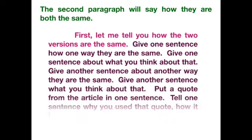Start with a transition sentence like: 'Let me tell you how the two versions are the same.' Then give one sentence about one way they are the same — maybe equipment, rules, or the playing field. Follow that with a sentence about what you think about it. Then give another way they're the same, followed by another sentence of your thoughts. If you want, take a quote from the article or video to make your paragraph longer. But once you use a quote, you have to give another sentence explaining how that quote is relevant — you can't just shove it in there.